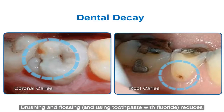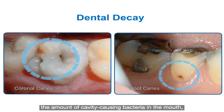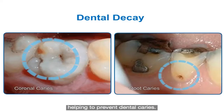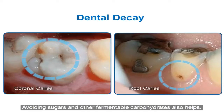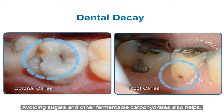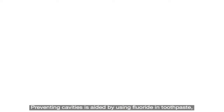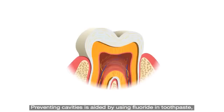Brushing and flossing reduces the amount of cavity-causing bacteria in the mouth, helping to prevent dental caries. Avoiding sugars and other fermentable carbohydrates also helps. Preventing cavities is also aided by using fluoride in toothpaste, such as stannous fluoride.